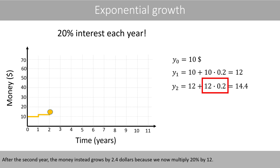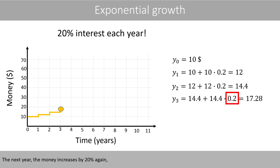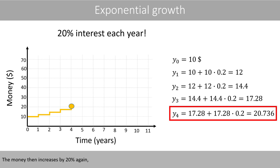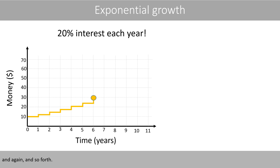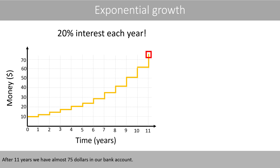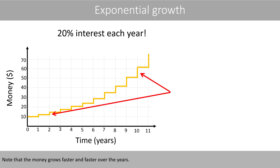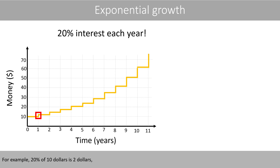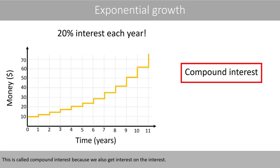After the second year, the money instead grows by $2.40, because we now multiply 20% by 12. The next year, the money increases by 20% again, which now results in a growth of $2.88. The money then increases by 20% again, and again, and so forth. After 11 years, we have almost $75 in our bank account. Note that the money grows faster and faster over the years. For example, 20% of $10 is $2, whereas 20% of $62 is about $12. This is called compound interest, because we also get interest on the interest.